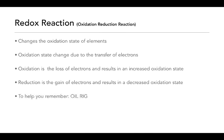A mnemonic to help you remember this is OIL RIG. OIL: oxidation is loss of electrons. RIG: reduction is gain of electrons. That loss of electrons causes the oxidation state to rise because you're losing a negative particle, which means you increase your positive charge. With reduction, you're gaining a negative particle, which means your overall charge or oxidation state is going to decrease.